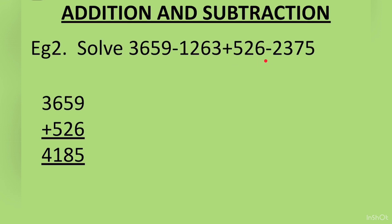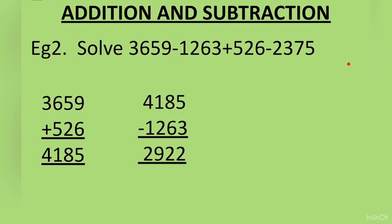For this, first we will add the addition numbers — the positive numbers, or the numbers with a plus sign or no sign at all. So one number is 3,659 and the other number is 526. We will add 3,659 plus 526 and the answer we will get is 4,185.